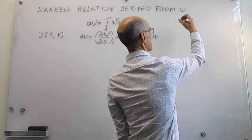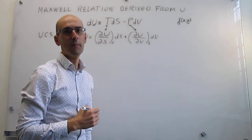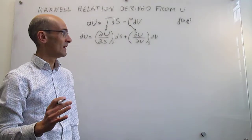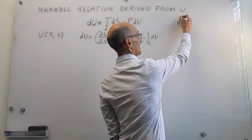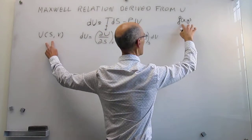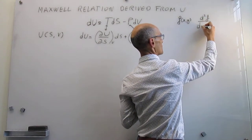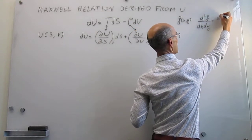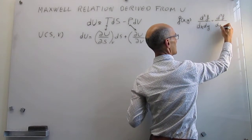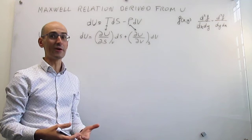To do that, we're going to leverage the fact that internal energy is a state function. For a state function, the function is path independent, and that can be tested by checking whether it has an exact differential. For an exact differential of a function of two variables, the second derivative with respect to first x then y is the same as the second derivative taken first with respect to y and then x.